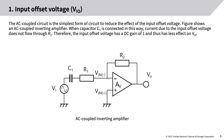The AC-coupled circuit is the simplest form of circuit to reduce the effect of the input offset voltage. The figure shows an AC-coupled inverting amplifier. When capacitor C1 is connected in this way, current due to the input offset voltage does not flow through R1. Therefore, the input offset voltage has a DC gain of 1 and thus has less effect on VO.